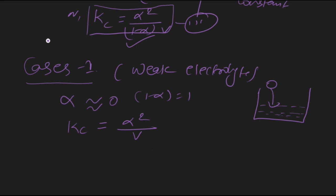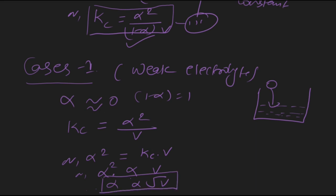So for a weak electrolyte, Kc = α²/V, or α² = Kc × V. Since Kc is a constant, alpha is proportional to the square root of V. This condition says that the degree of ionization is directly proportional to the square root of the volume of the solvent for a weak electrolyte. If the volume of the solvent rises, then alpha will also rise.